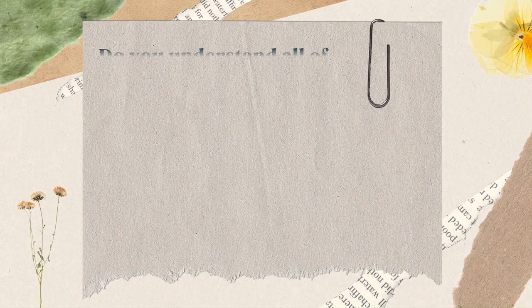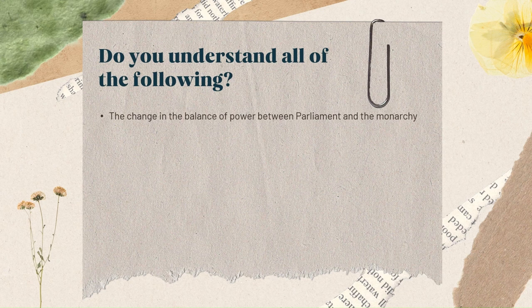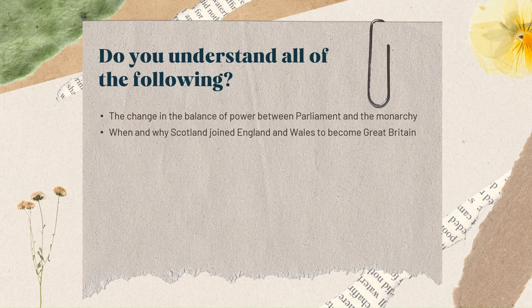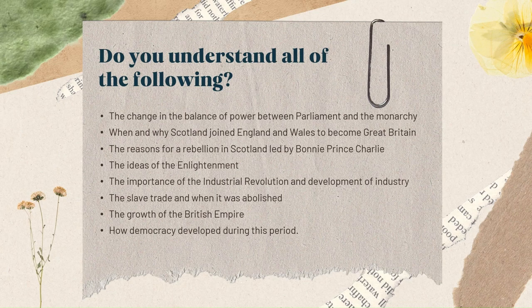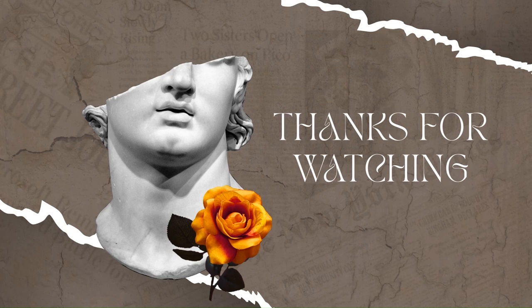Now let's recap what you need to know from this chapter: the change in the balance of power between Parliament and the monarchy; when and why Scotland joined England and Wales to become Great Britain; the reasons for a rebellion in Scotland led by Bonnie Prince Charlie; the ideas of the Enlightenment; the importance of the Industrial Revolution and development of industry; the slave trade and when it was abolished; the growth of the British Empire; and how democracy developed during this period. Thanks for watching. Don't forget to like and subscribe for more study notes. Good luck.